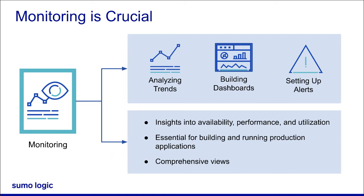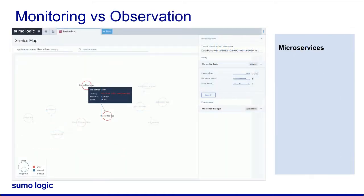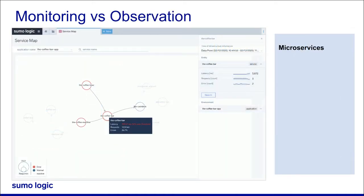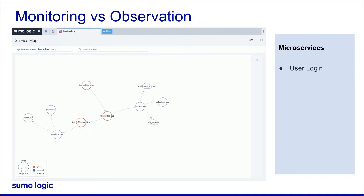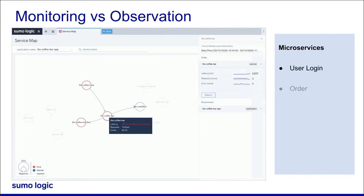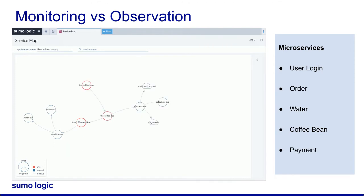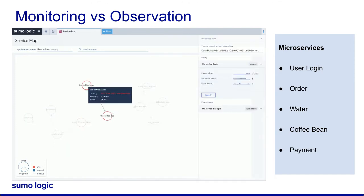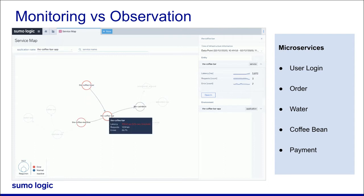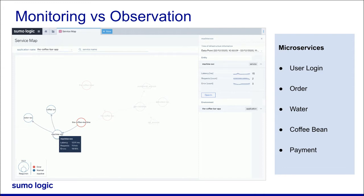Can you explain this a bit more? Sure. Let's look at our coffee app. This app is made up of microservices like the user login service, the order service, the water service, the coffee bean service, and the payment service. Therefore, when things break, it's difficult to troubleshoot the root cause of the outage on account of the dynamic nature of microservices-based architectures.